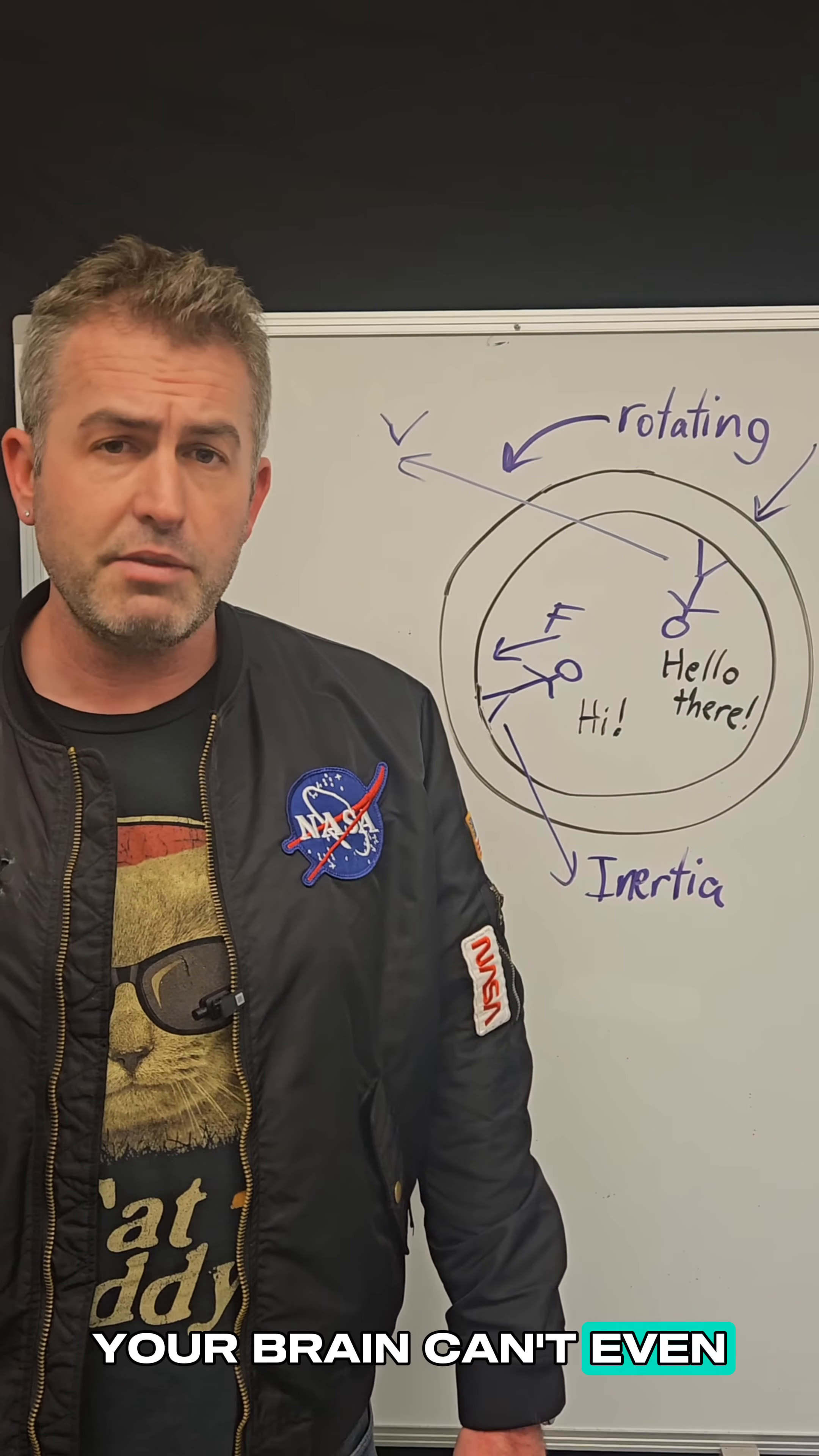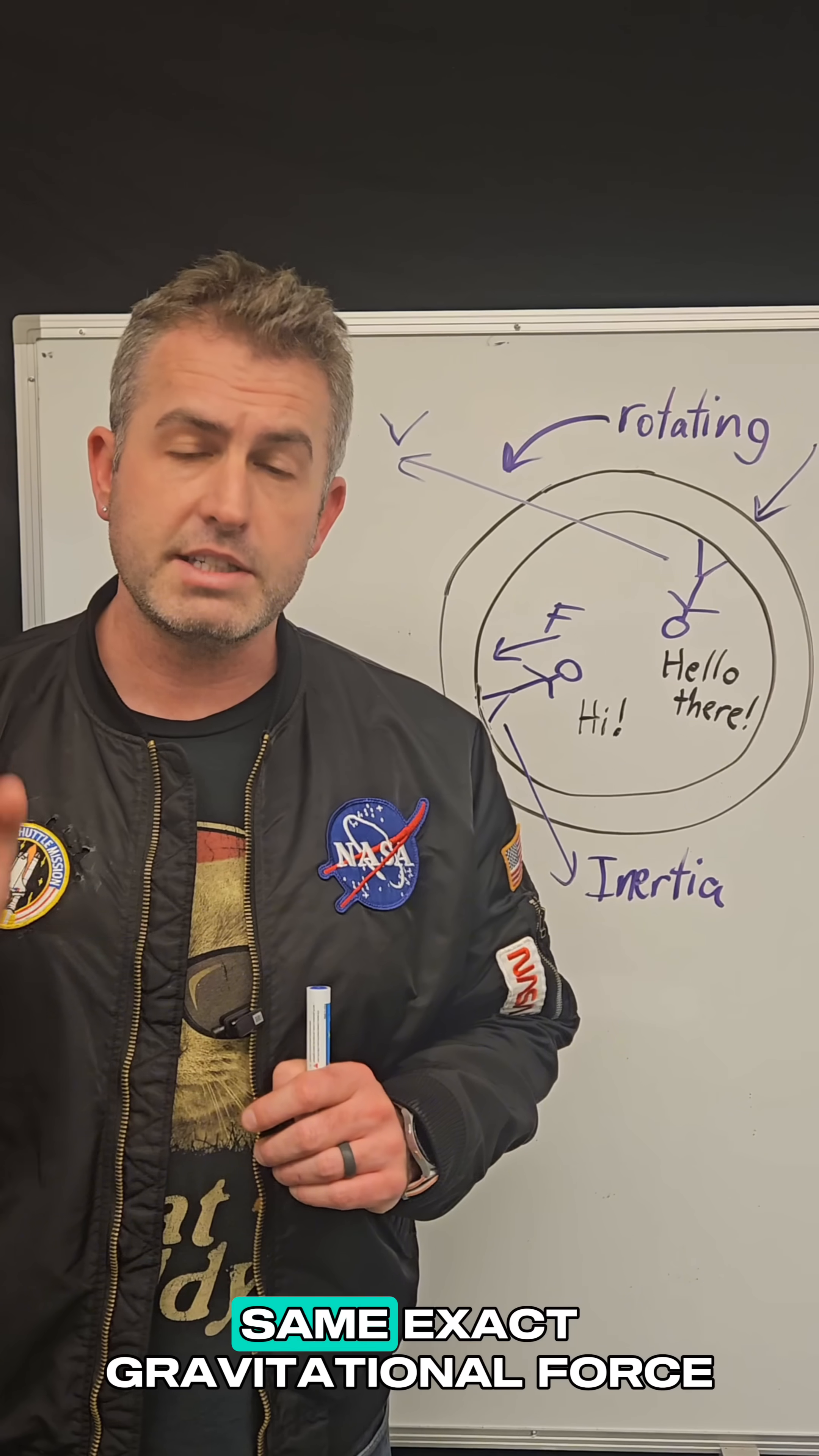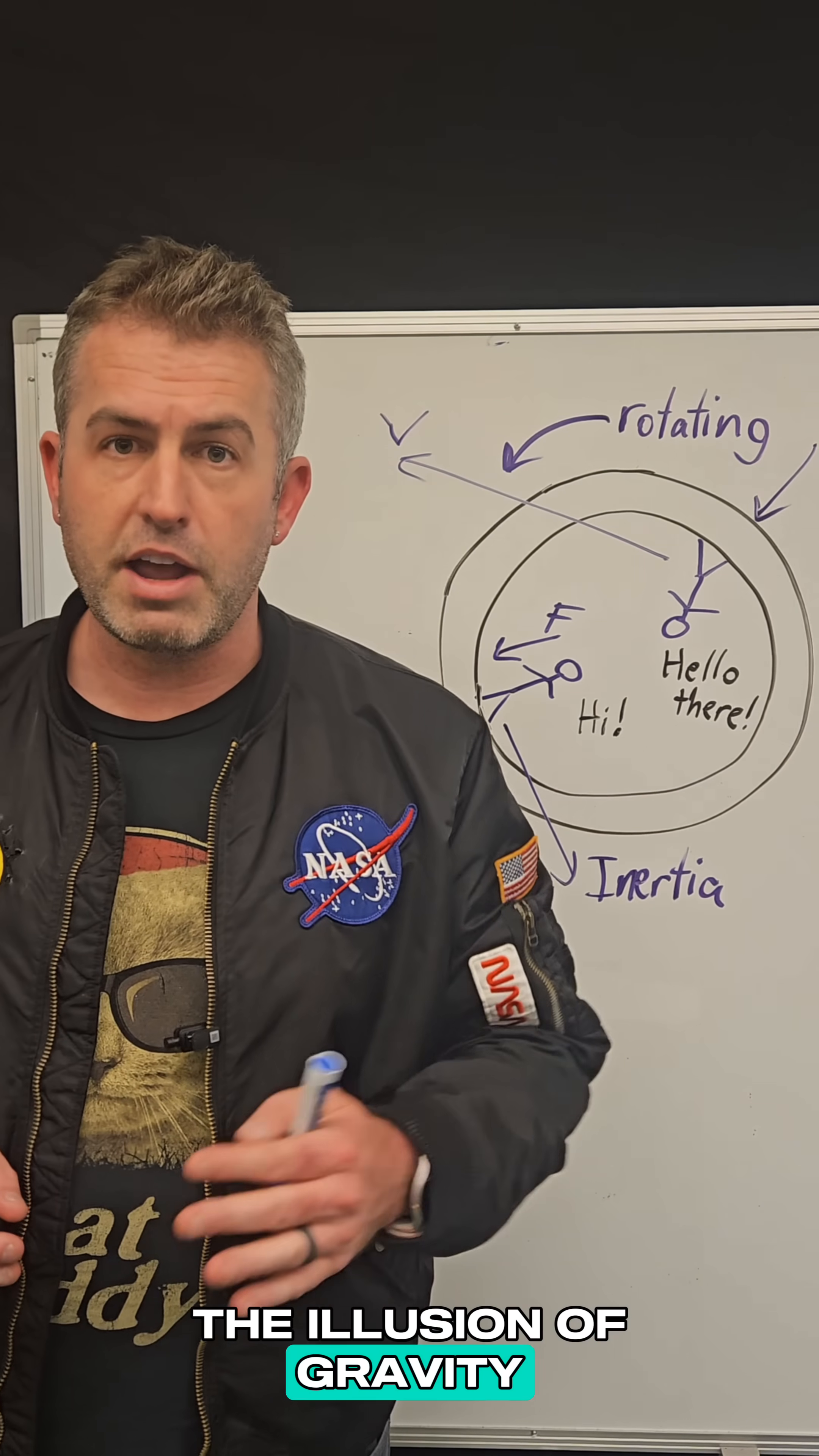In fact, your brain can't even tell the difference. So as long as you spin at just the right speed, you can generate just the right amount of force. And if you calibrate that speed perfectly, and you spin the station at exactly the right velocity, you can get the same exact gravitational force as we normally feel on planet Earth. So that is the reason why spaceships spin. We're using centripetal force to create the illusion of gravity.